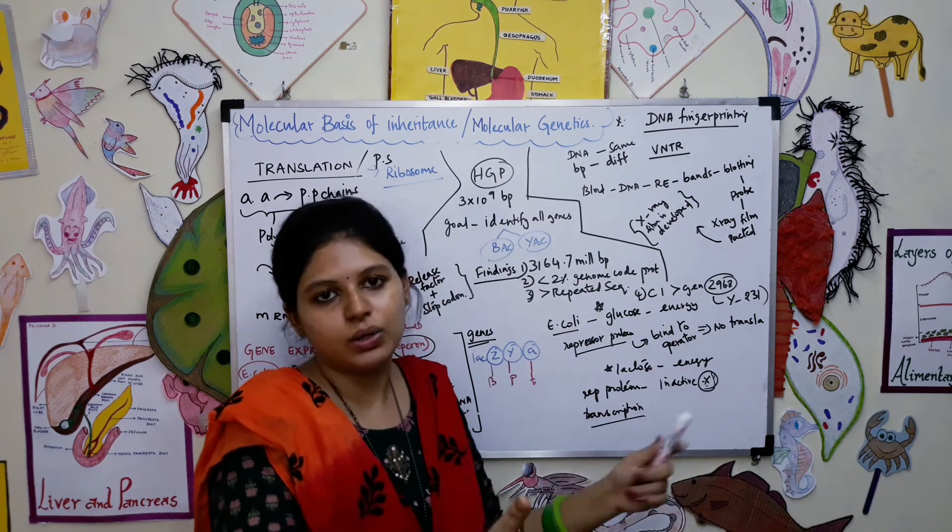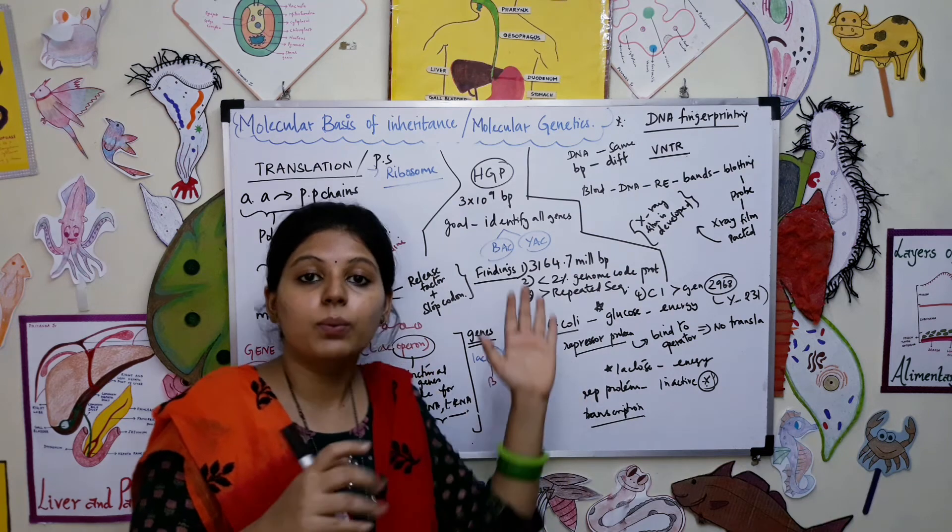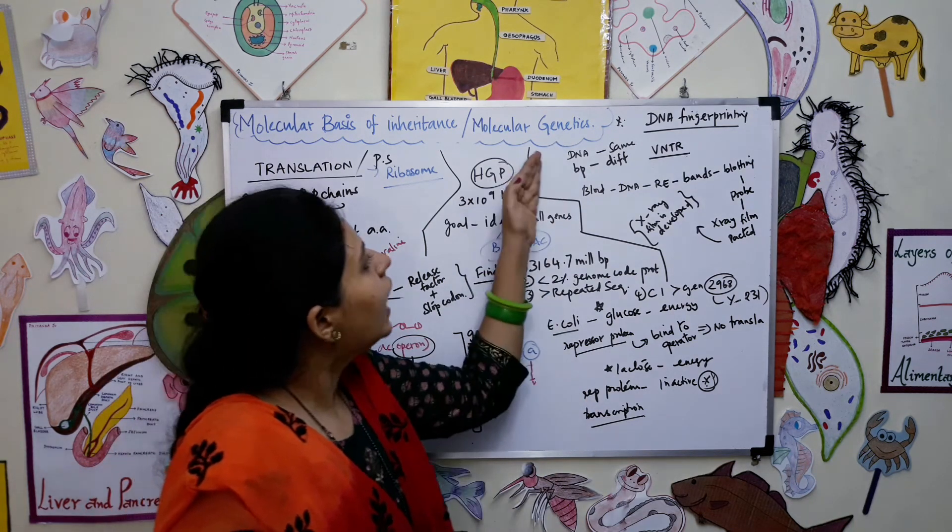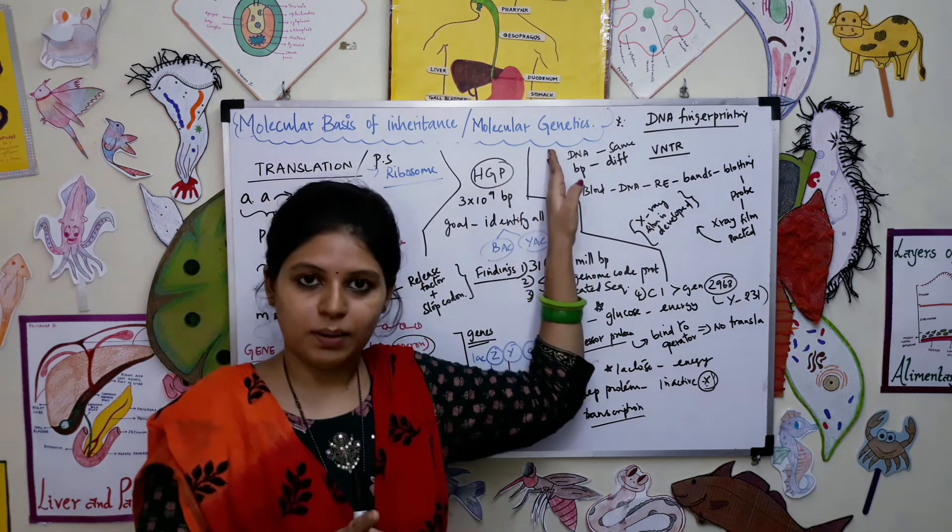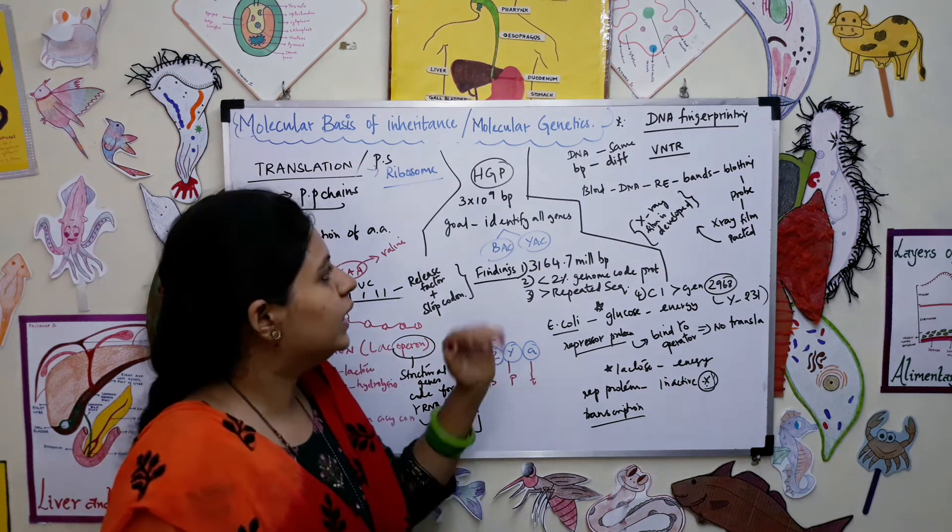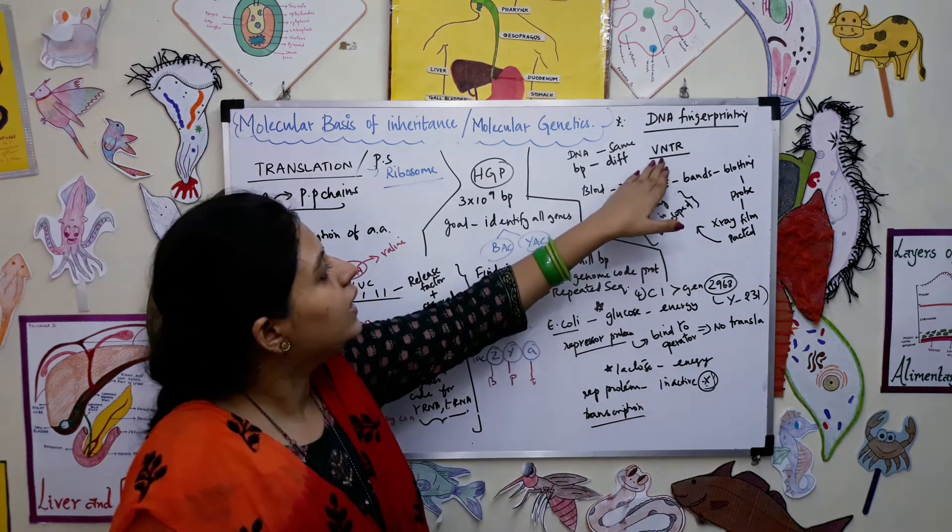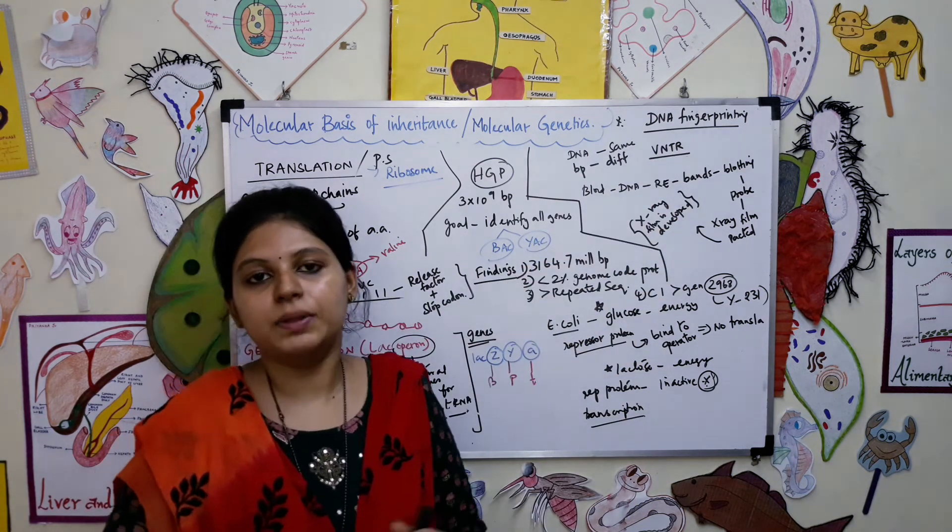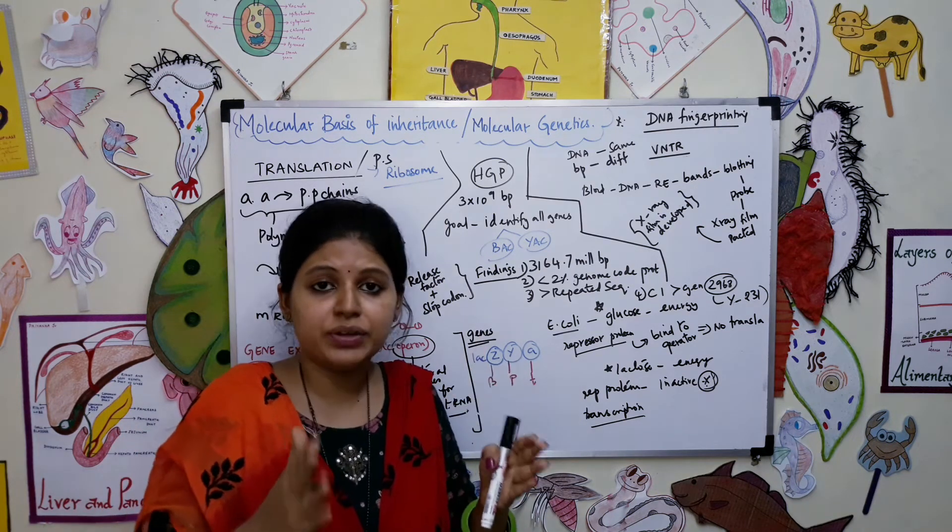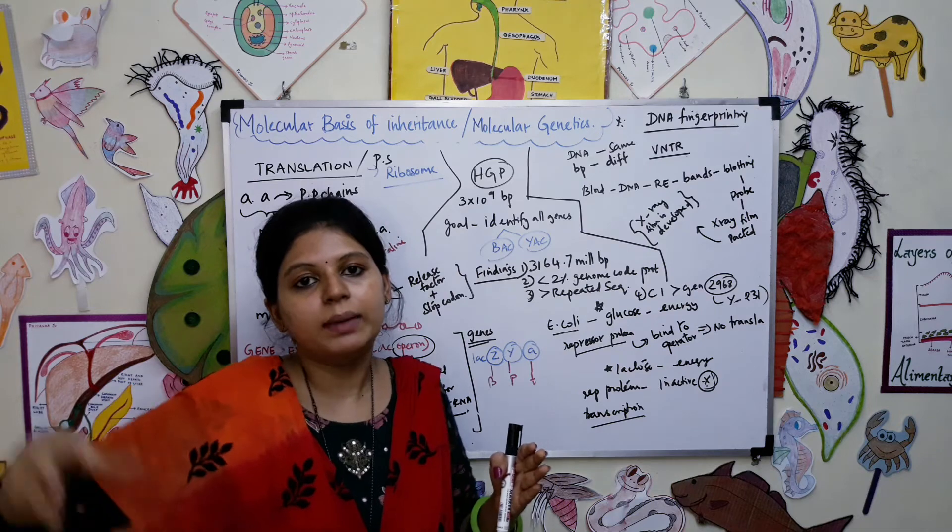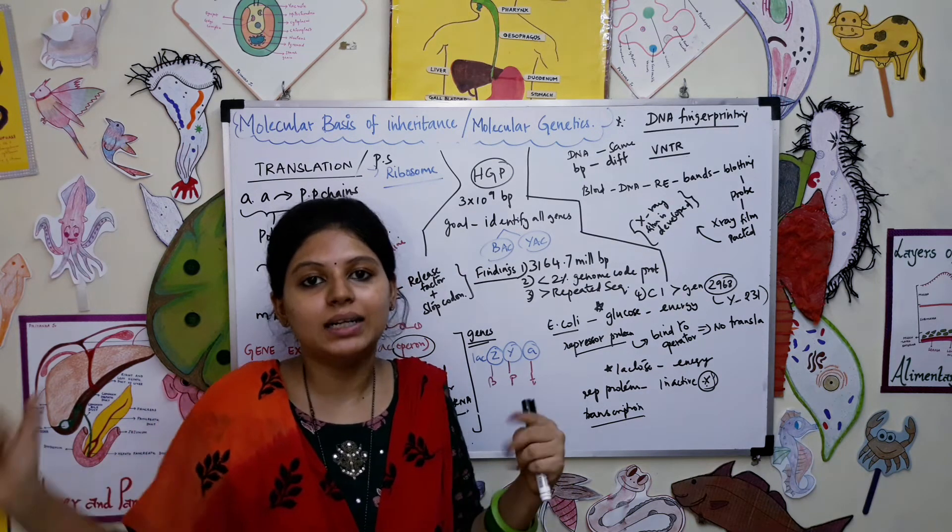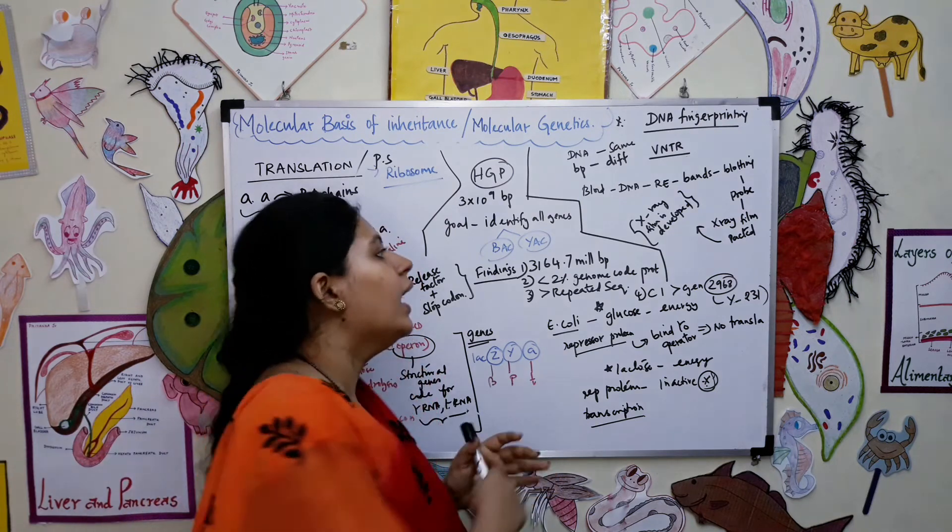What process happens in DNA fingerprinting? DNA is same for all but only the base pairs differ - it varies from individual to individual. You call it variable number tandem repeats, which means that a specific sequence will keep on repeating in the DNA. That's VNTR - variable number tandem repeats. With the help of VNTR you do this DNA fingerprinting.